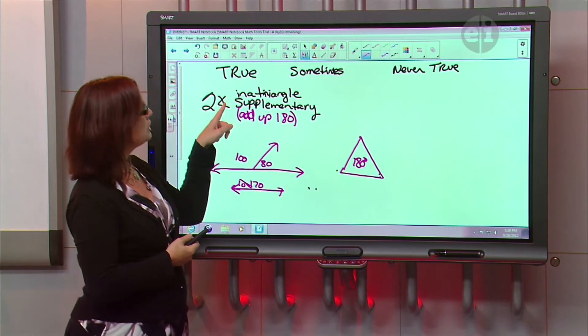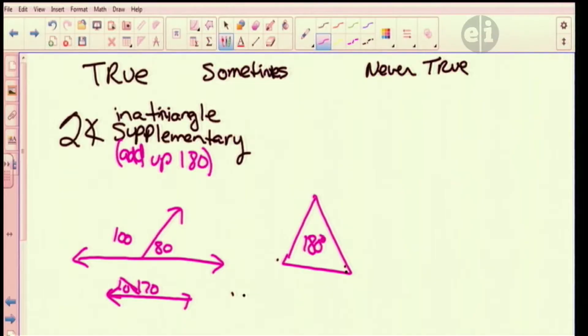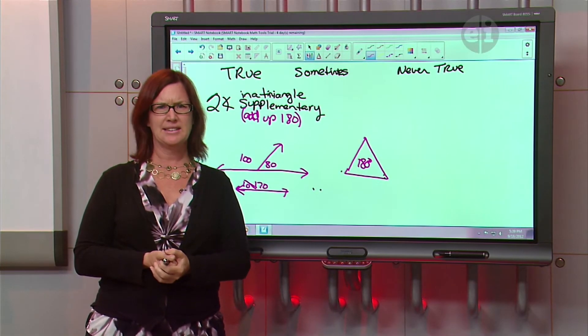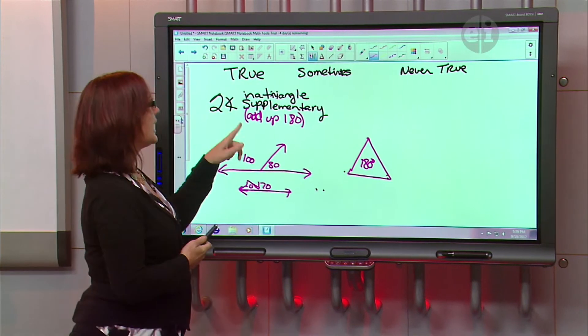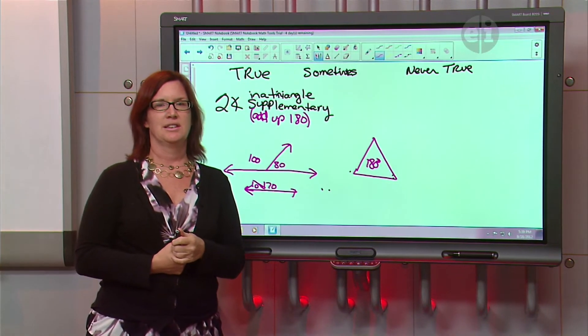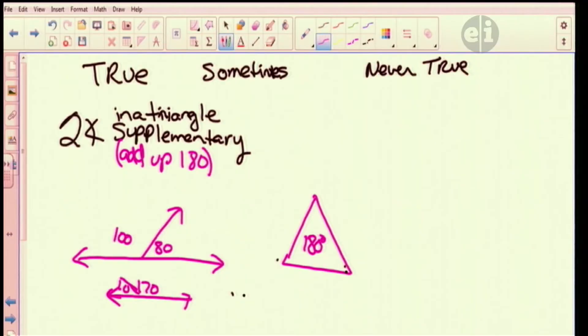So the thing is that this cannot be true because in the triangle, two angles can't be supplementary because then you wouldn't have the third angle. You kind of used up all your angles. Does that make sense? Yes. Okay, great. So our answer, is it true sometimes or never true? Never true. It is never true. So that's the answer to that problem.